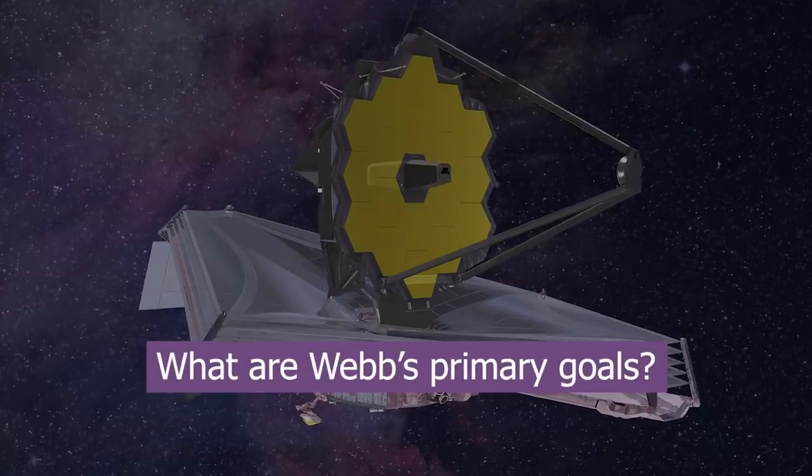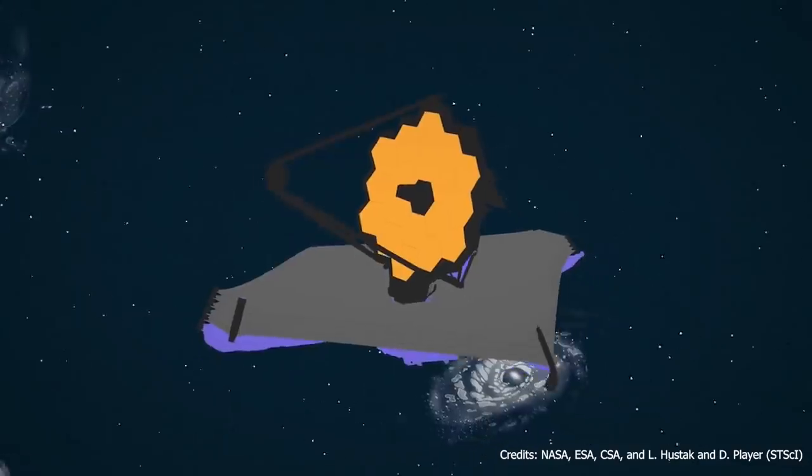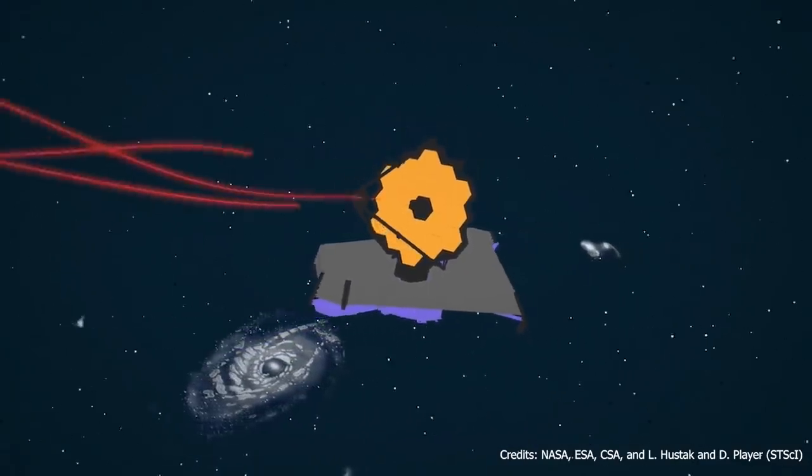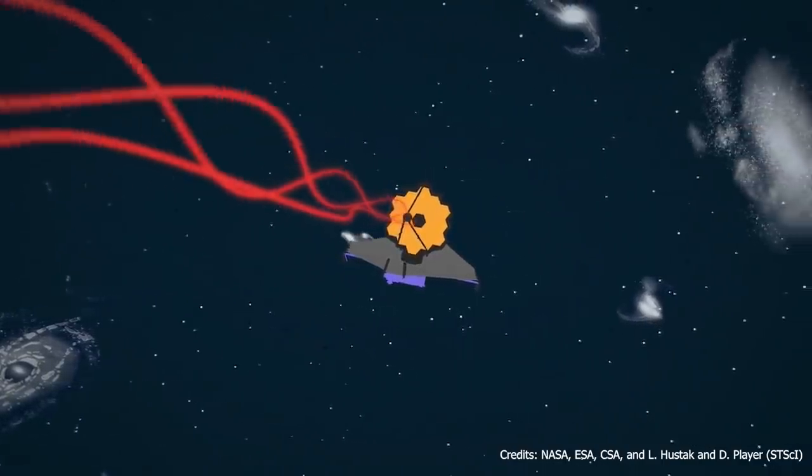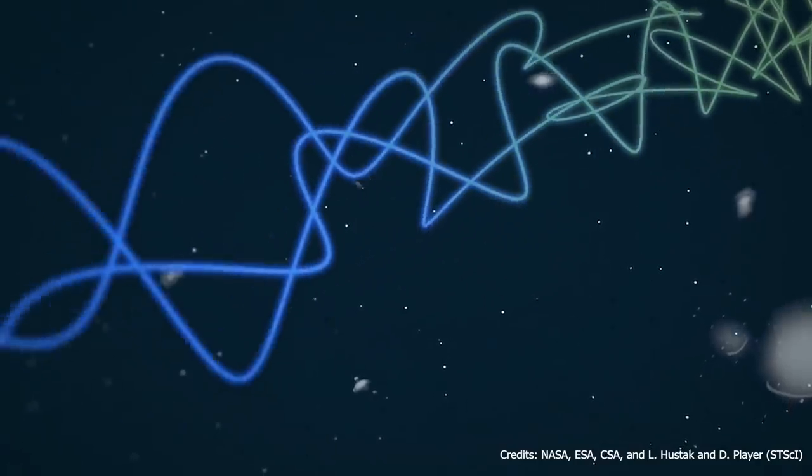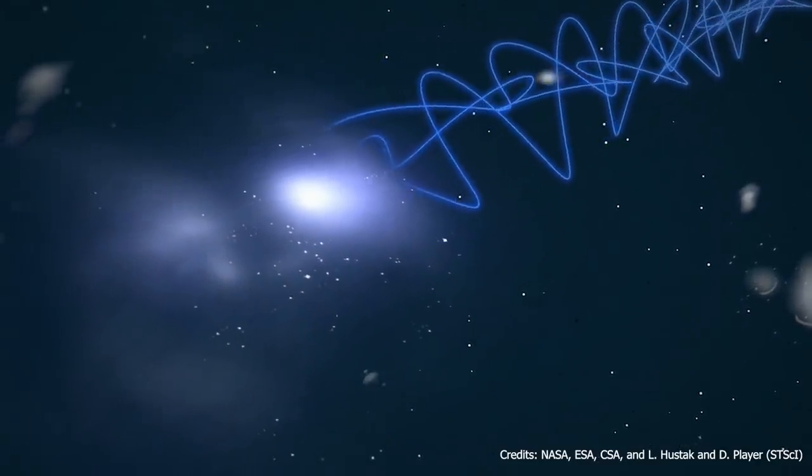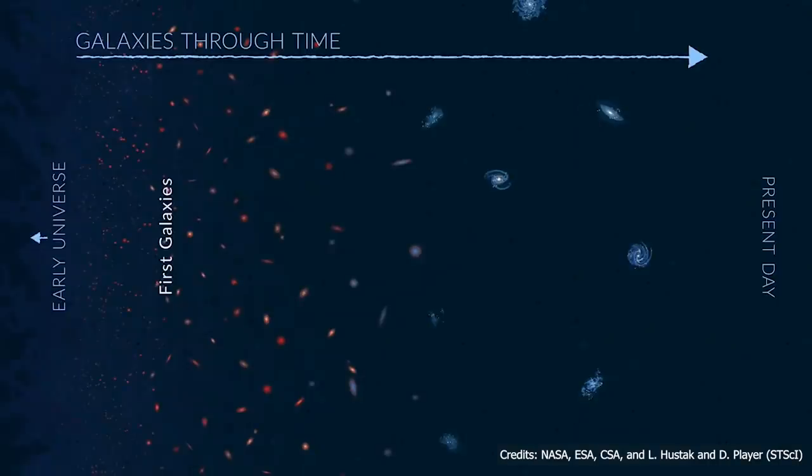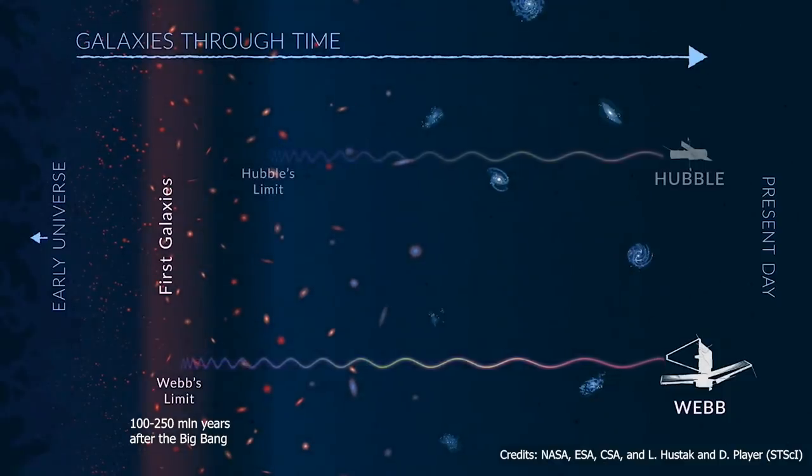What are Webb's primary goals? One of the main goals of the James Webb Space Telescope is to look back through time and detect the light from the first stars and galaxies. How will it be possible? As light takes time to travel, the farther away an object is, the farther back in time we're seeing it. James Webb will be able to see back to about 100 to 250 million years after the Big Bang, when the first galaxies formed.